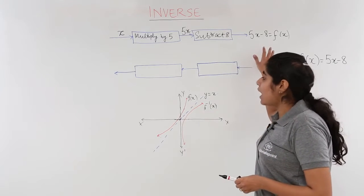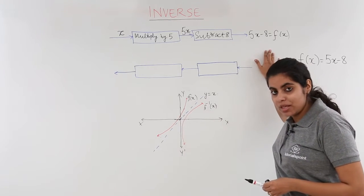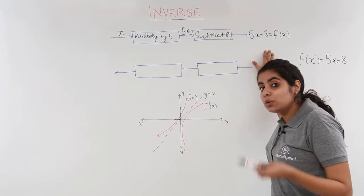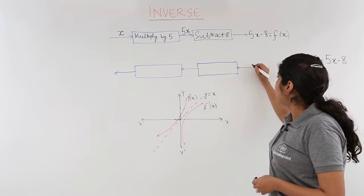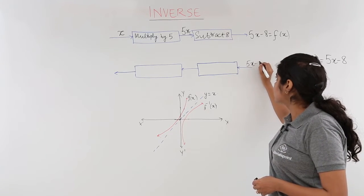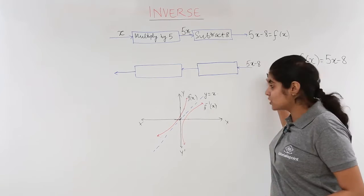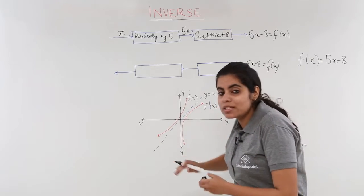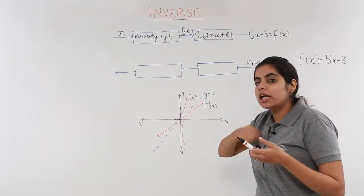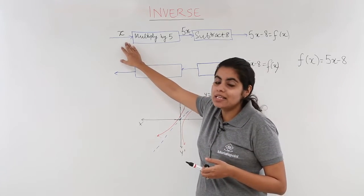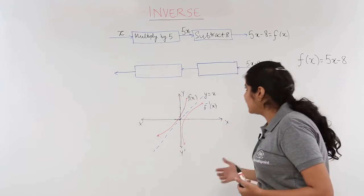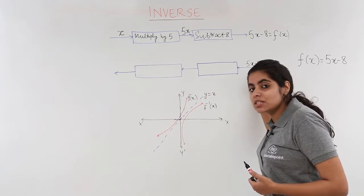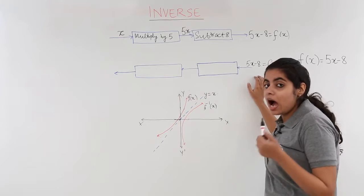In this type of function category, what we'll be doing is, now I have the function with me and I have to obtain the inverse. So what happens is, I start with 5x - 8 which is equal to f(x) basically, and then what I do is, I have to get the input which I had fed, that is, I have to get x. So getting x from 5x - 8 is possible? Yes, it is.